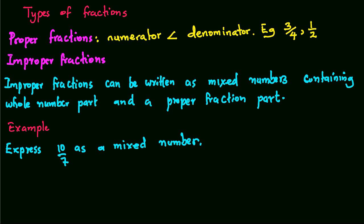1/2 is a proper fraction, etc. The second type of fraction is improper fractions. In this case, the numerator is greater than the denominator. For example, 4/3, 3/2.